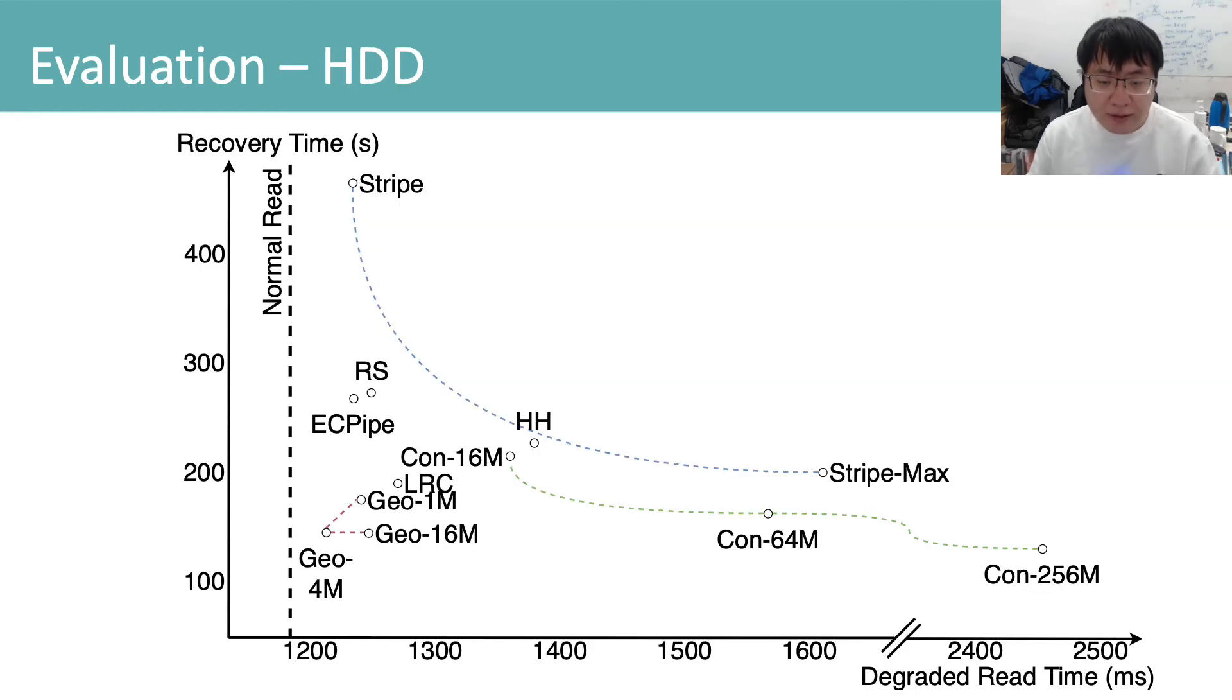This figure shows the average degraded read time and recovery time for different codes and layouts. Striped layout and contiguous layout are two alternative layouts that use regenerating codes. Evaluation shows that geometric partitioning can have the best recovery degraded read trade-off compared to other competitors on HDD.